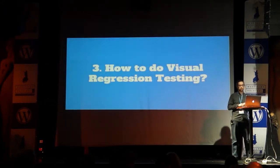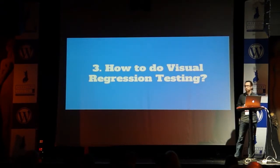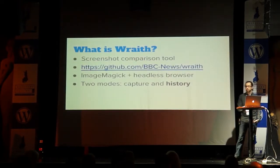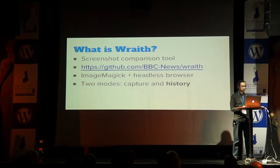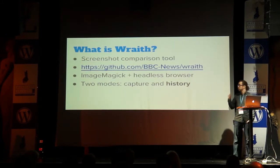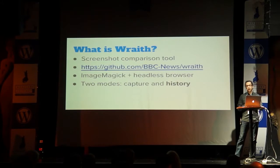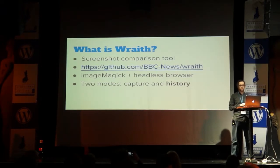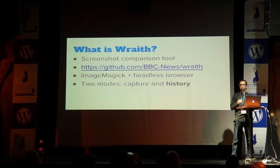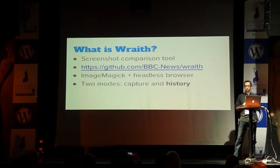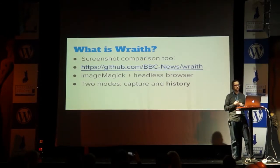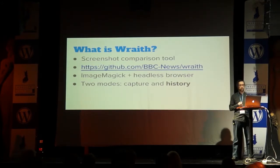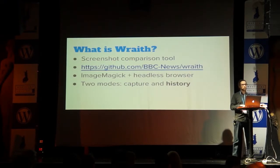So how do you actually do visual regression testing? One way is with a tool called Wraith. Wraith is a screenshot comparison tool created by the developers at BBC News. It's open source and you can find the code on GitHub. Wraith uses a headless browser to create screenshots of web pages at different moments in time, and then creates a diff image from those two screenshots.